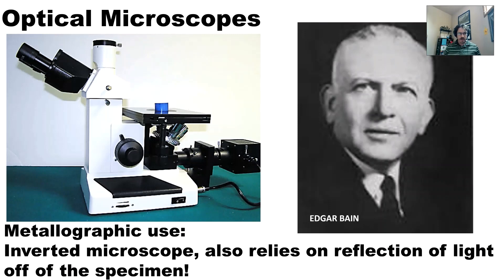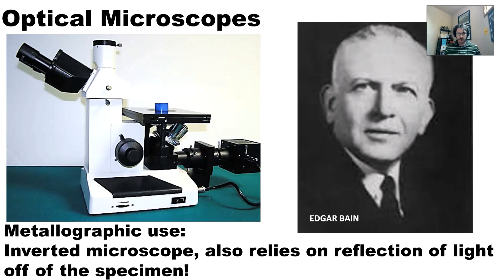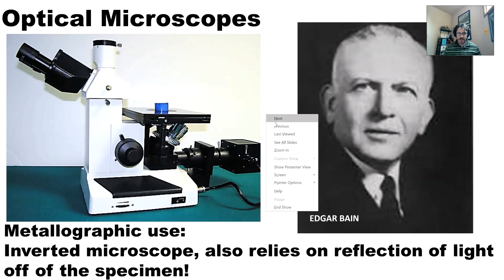If you've ever seen someone try to perform metallography using a biological microscope - and I've actually witnessed this - it's pretty funny. You always want to use an inverted microscope for light optical microscopy or metallography. There are some similarities between the two, and I've posted a whole other video on performing optical metallography which I suggest you watch.